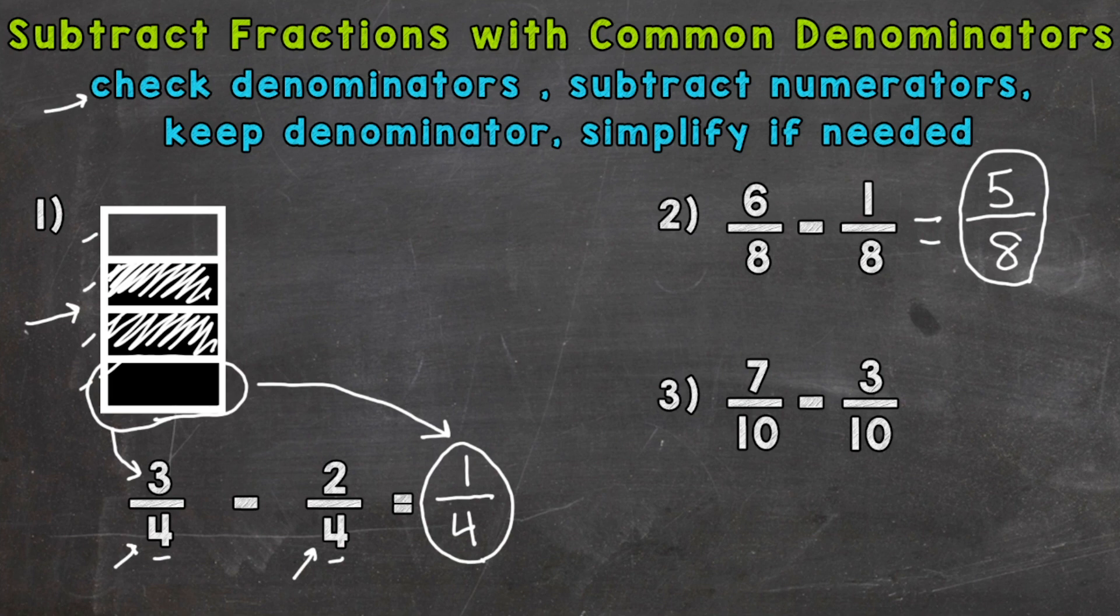Now number three, we have seven tenths minus three tenths. Check our denominators. We have two tens there, so we're good to go.